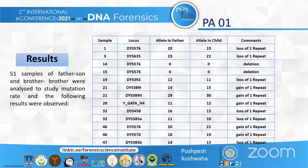Now, the following results were observed. This table shows the type of mutation at each particular marker. In the samples, two cases of deletion were found, and the rest were either a gain of one repeat or a loss of one repeat.